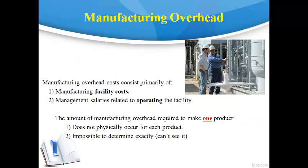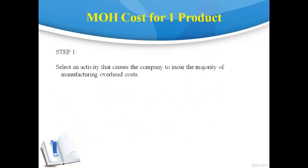Manufacturing overhead is an indirect cost that includes primarily the cost of the manufacturing facility and manufacturing management. Indirect costs cannot be traced directly to one product. This presents a problem when completing the cost sheet, which is an estimated cost to make just one product. The accountant's solution is to estimate a cost of manufacturing overhead for each product using the estimated cost of an activity that occurs in the manufacturing process. The first step is to select an activity that causes the company to incur facility and management costs.